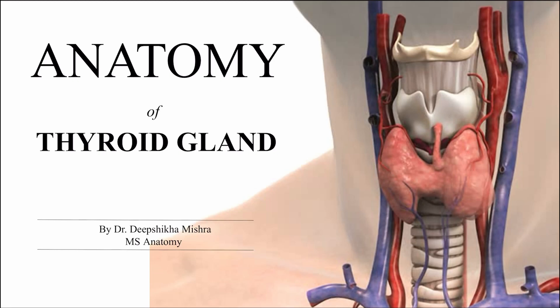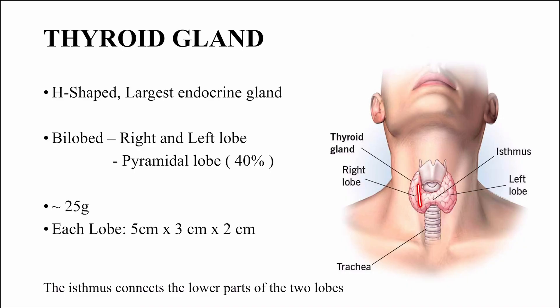Last time we discussed about the pituitary gland. Today we will study about the anatomy of the thyroid gland. The thyroid gland is the second largest endocrine gland. It weighs about 25 grams.